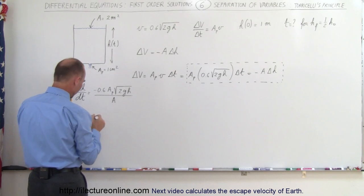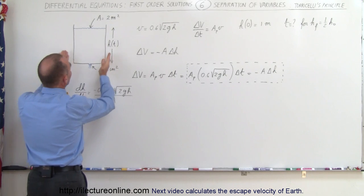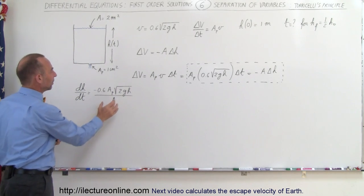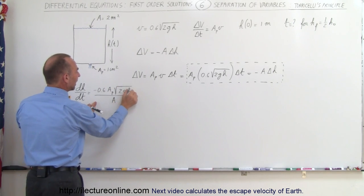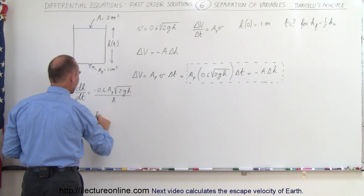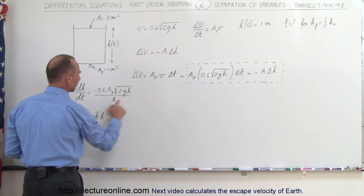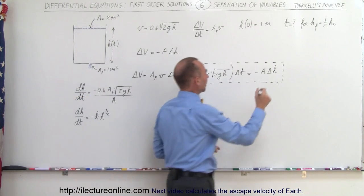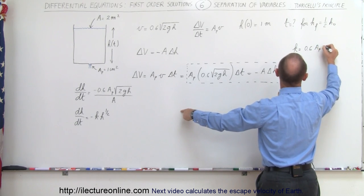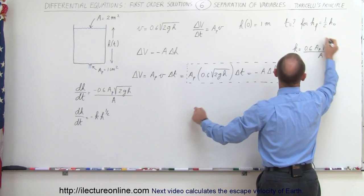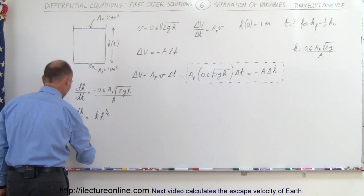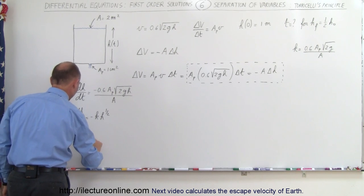Now what I'm going to do to simplify it — since both the areas are constants and don't change — we could have a situation where we have a funnel where the cross-sectional area changes as a function of H, but in this example A is a constant. So I can take this whole thing right here, call it a constant, and have H as the variable. So I can write dH/dt is equal to minus K times H to the one-half power, where K is equal to 0.6 times A sub P times the square root of 2G divided by A. Now we use the separation of variables: I'll move dt over here and H down here, so I have dH divided by H to the one-half power is equal to minus K times dt.